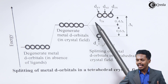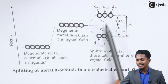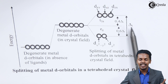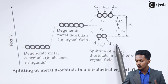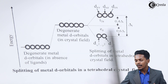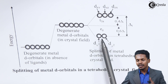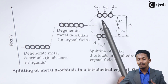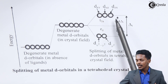The t2g orbitals experience maximum repulsion and therefore have higher energy. The energy difference between the two levels is delta t, which has a value of 10 Dq. The eg level is stabilized by 0.6 delta t compared to the average energy, meaning electrons in eg are very stable, while electrons entering t2g are destabilized by 0.4 delta t.